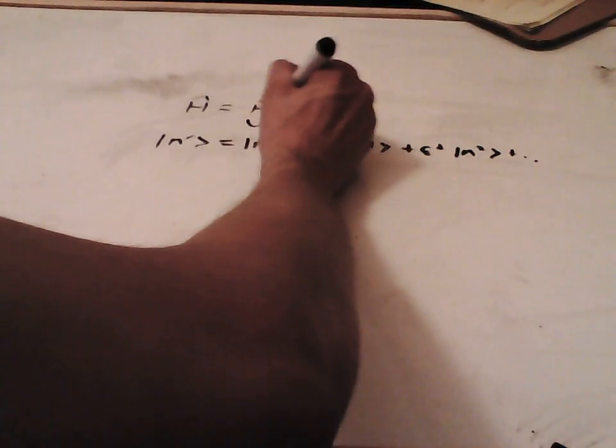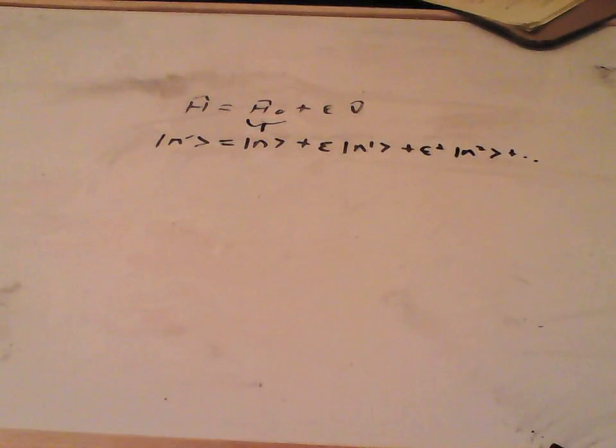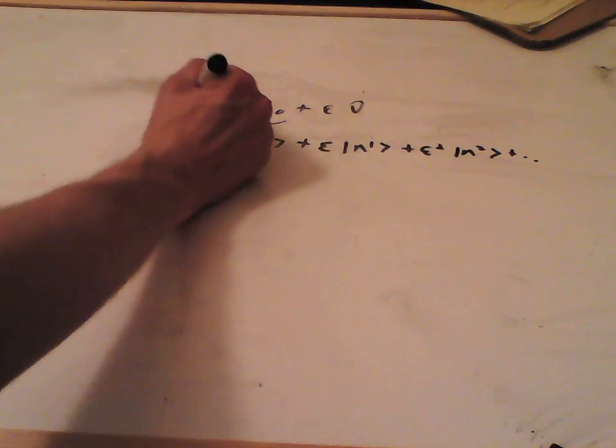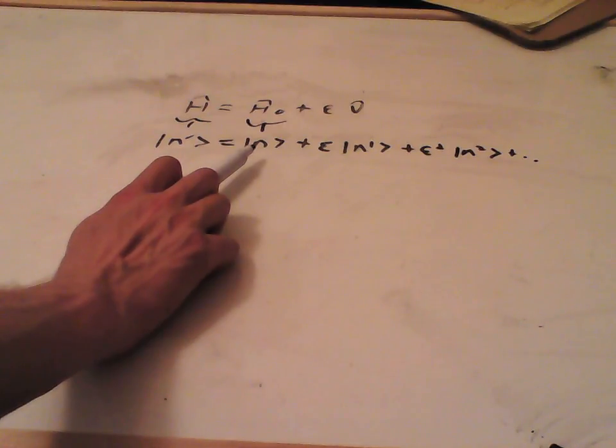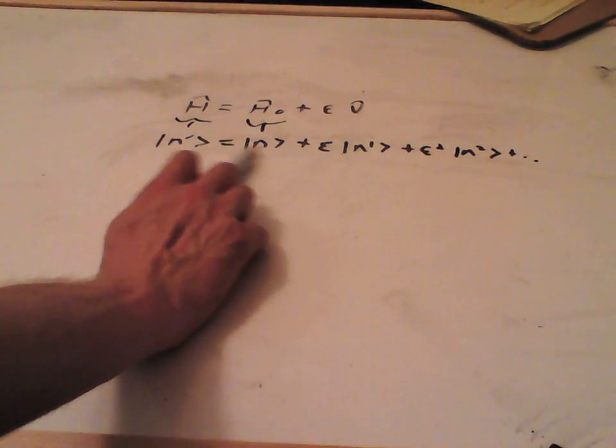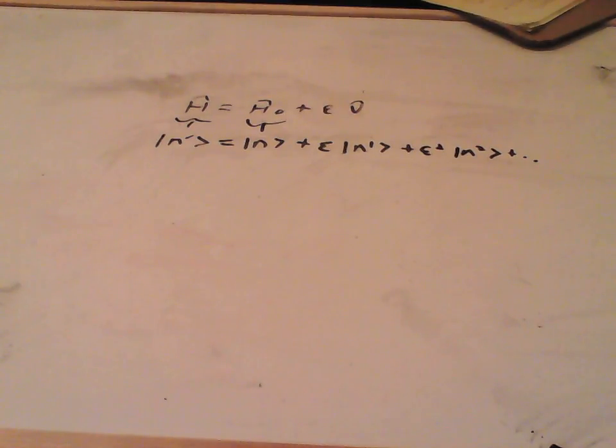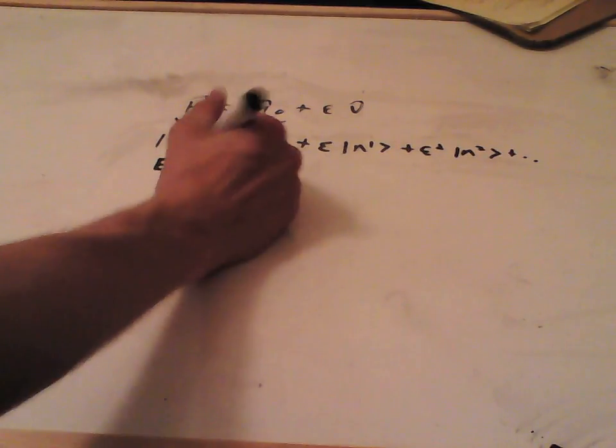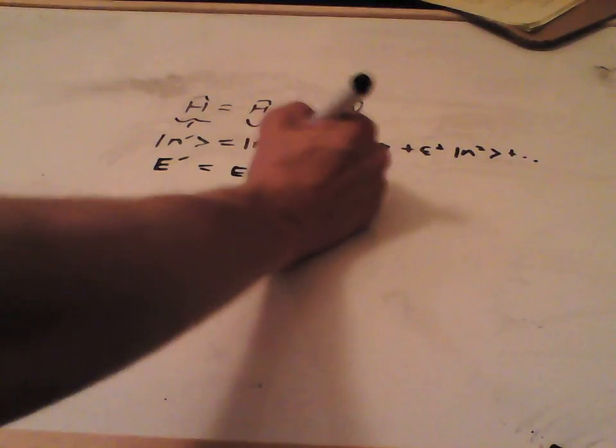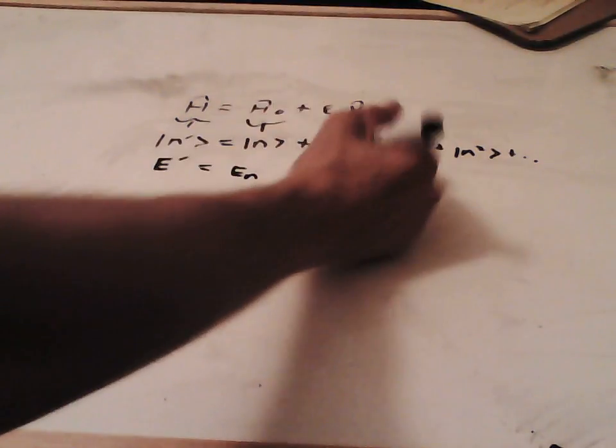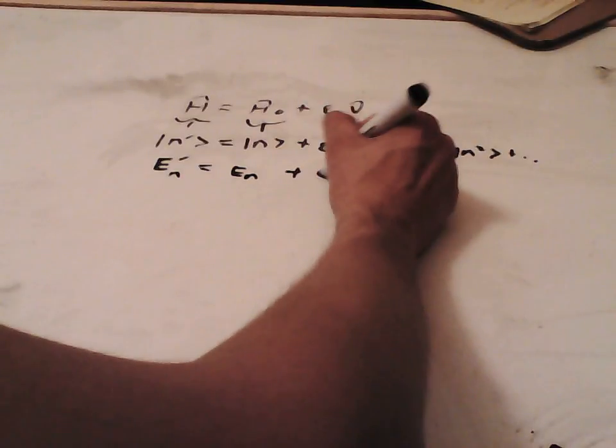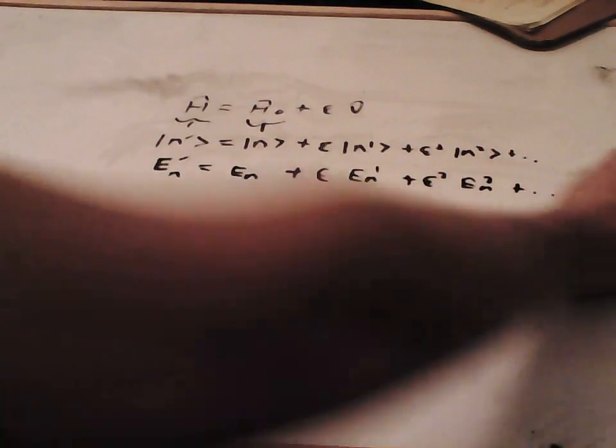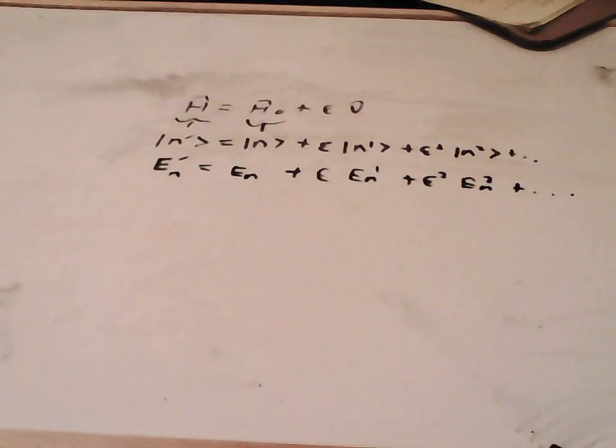The aim of perturbation theory is to find these corrections. This is the eigenstate of this Hamiltonian. And we know to first order our new eigenstate. Likewise, we're going to expand our energy. So, En prime is the energy of this eigenstate here. And that must go to En plus epsilon En1 plus epsilon squared En2 and so on.